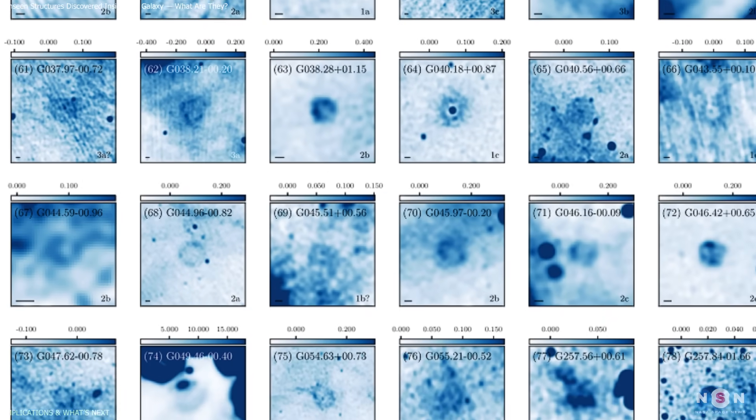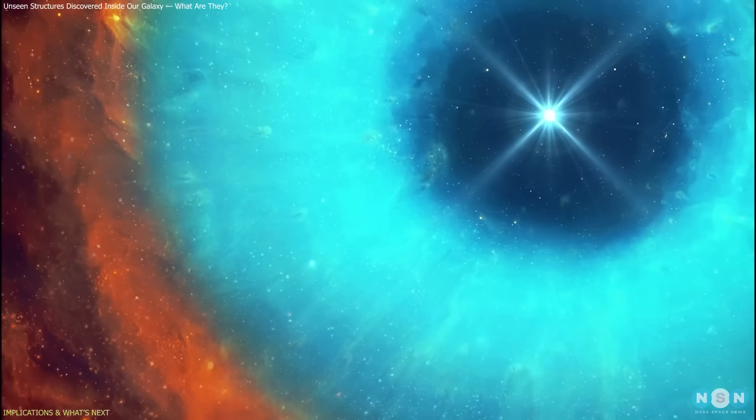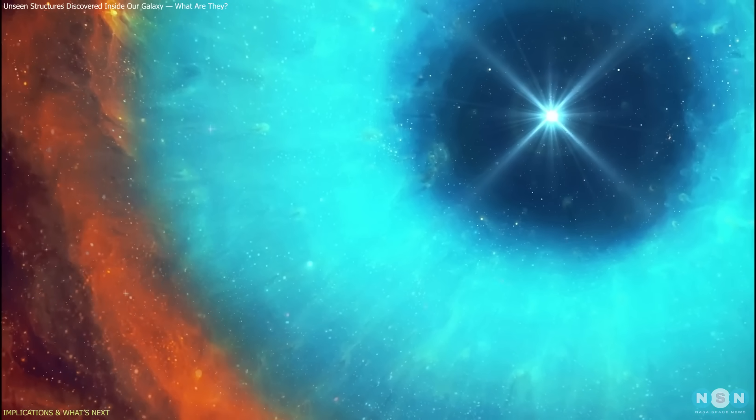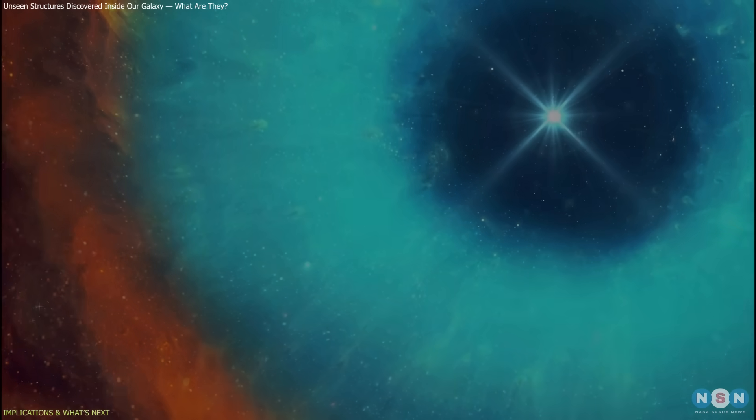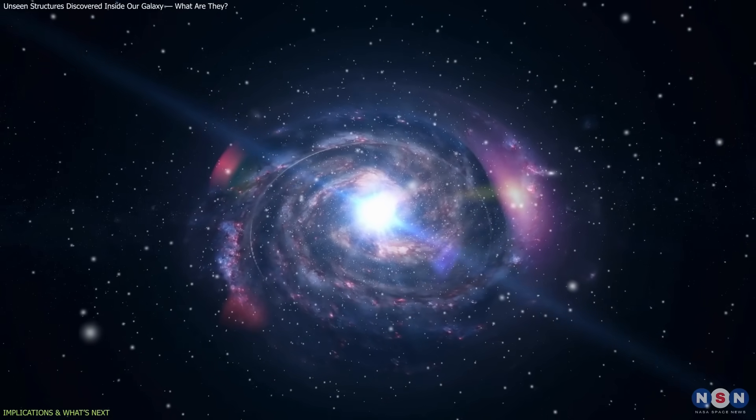Each ring represents a piece of the galaxy's history. Some tell the story of a star's final breaths. Others may trace events we've never clearly observed before. Together, they give us a more complete view of how matter and energy move through the Milky Way.